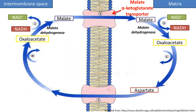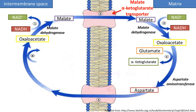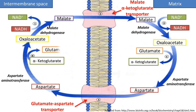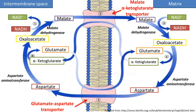Oxaloacetate needs to be converted to aspartate to go back into the cytosol. For this, glutamate is converted to alpha-ketoglutarate, facilitated by aspartate aminotransferase. Aspartate then moves out through the glutamate-aspartate transporter and gets converted back to oxaloacetate via aspartate aminotransferase. Alpha-ketoglutarate must be converted to glutamate for this process. The intermediates alpha-ketoglutarate and glutamate are transported in and out of the mitochondria through their respective transporters.